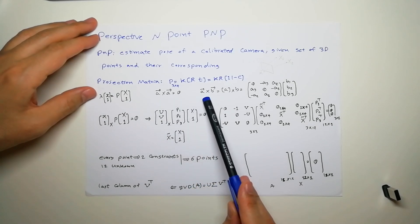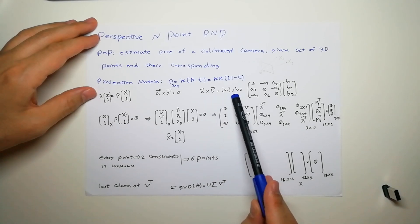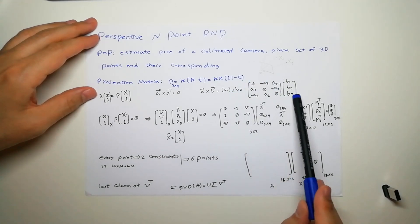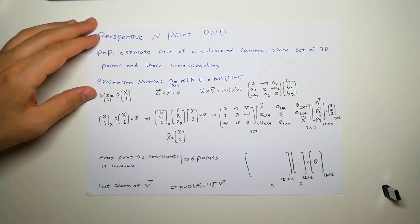We also know that we can rewrite any cross product as a matrix form. We use this notation to distinguish that this is a cross product in matrix form. You can write it like this.